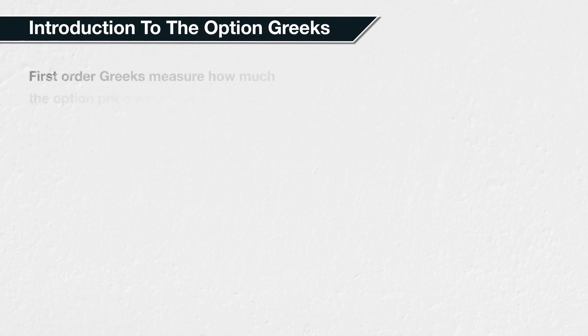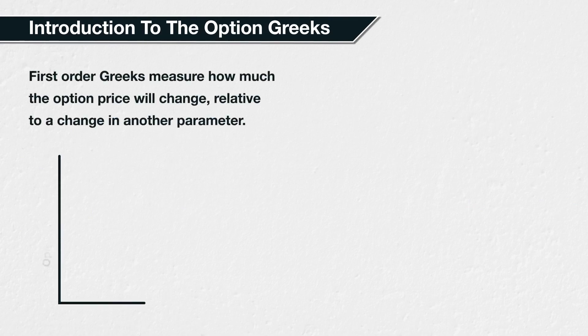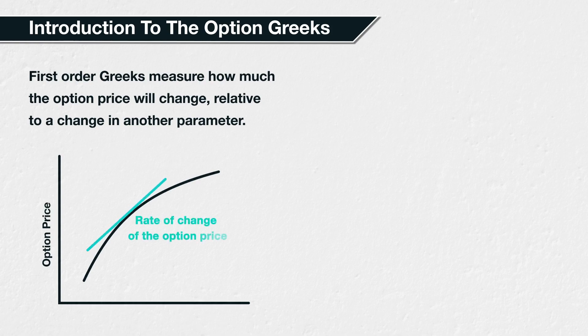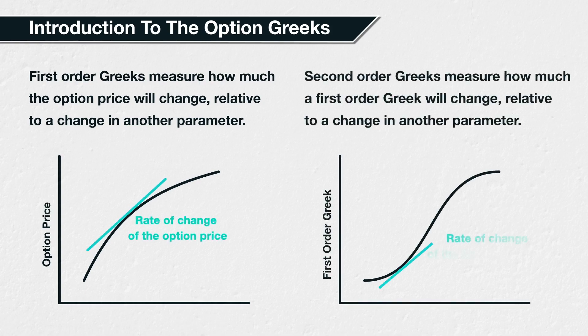First-order Greeks measure the sensitivity of an option's price to changes in various parameters. There are also second-order Greeks that measure the sensitivity of a first-order Greek to changes in various parameters. In this lecture, we'll give a brief overview of each of the most commonly used Greeks, before going into more detail in a separate section for each.